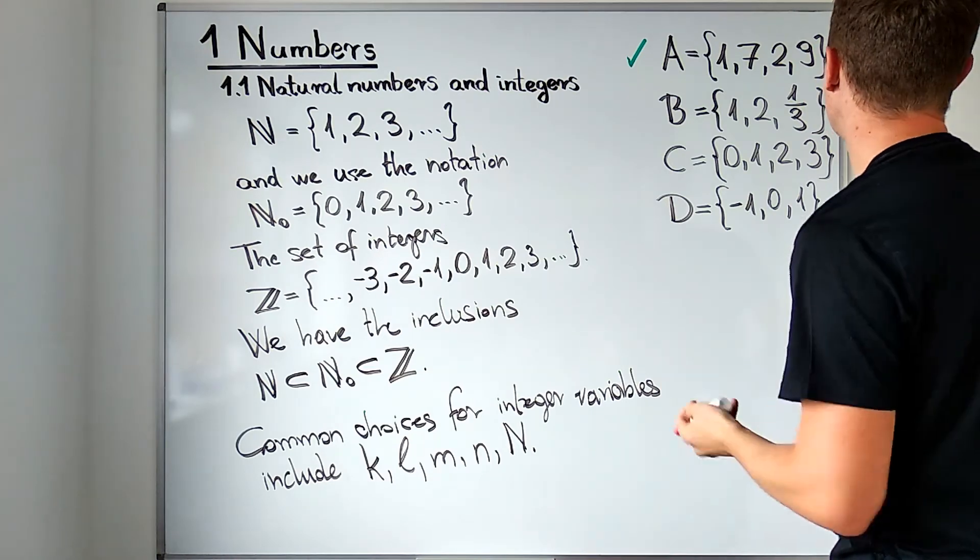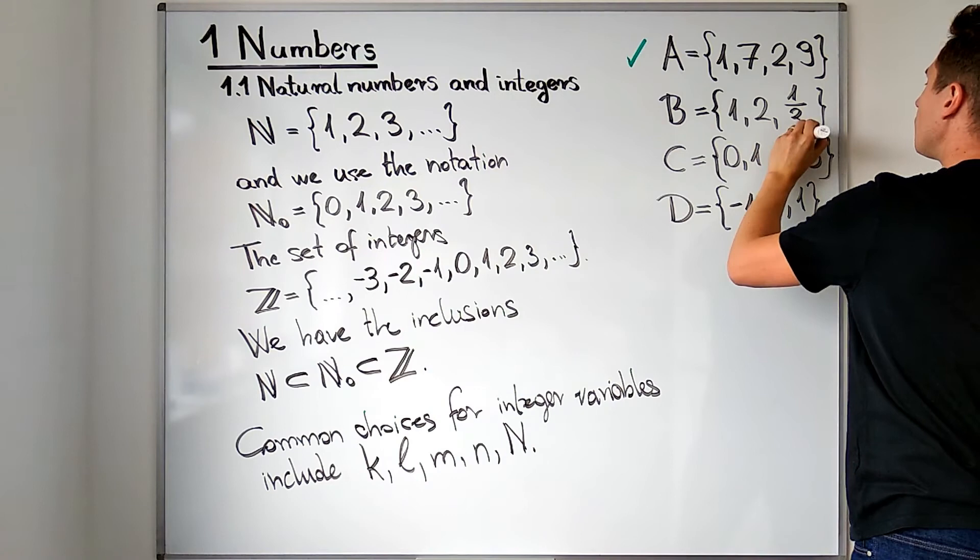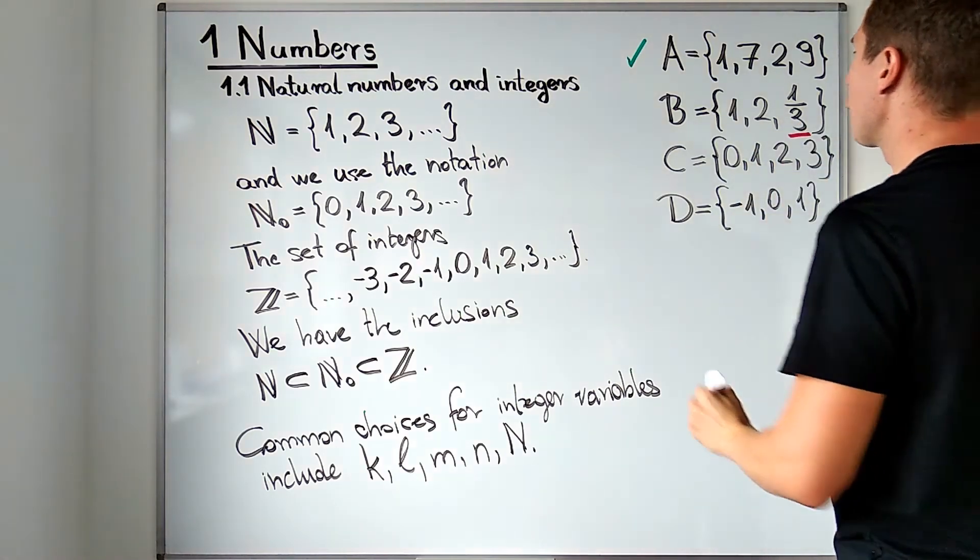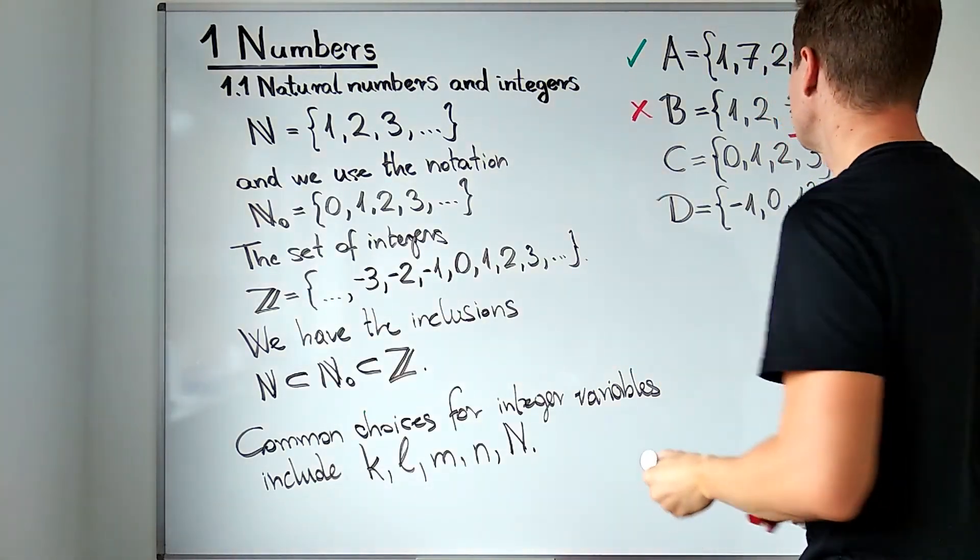Set B has the elements 1 and 2 which are natural numbers but it also has a fraction in it, 1/3, which excludes it. So this is not a set with only natural numbers in it.